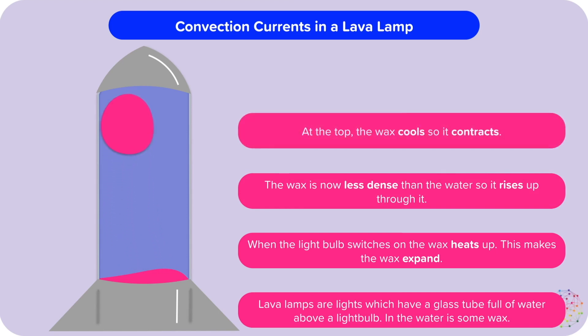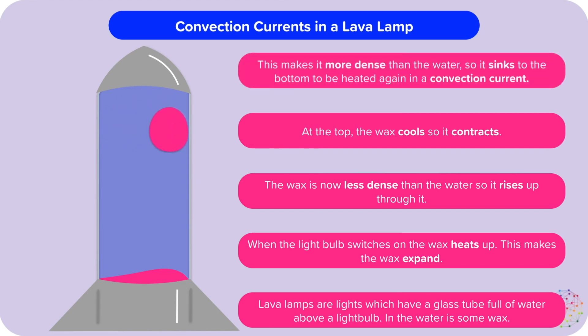At the top, the wax cools and contracts, it shrinks. This makes it more dense, so it sinks down to the bottom to be heated again in a convection current. So we heat, expand, it becomes less dense, it rises up, it contracts and cools, becomes more dense and sinks. And so the convection current goes round and round and round.